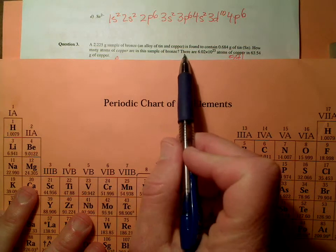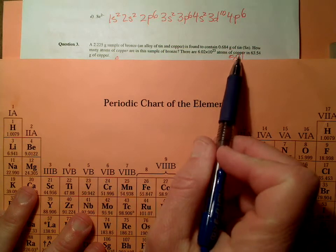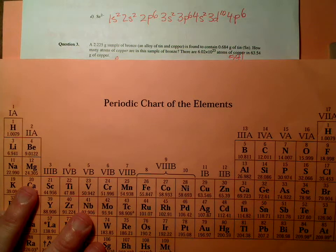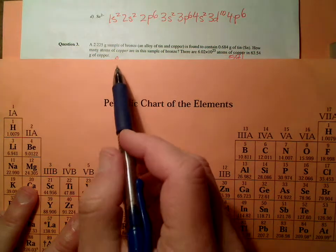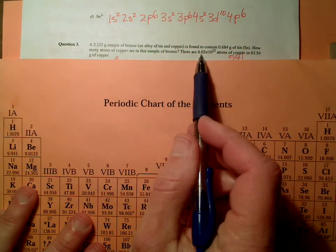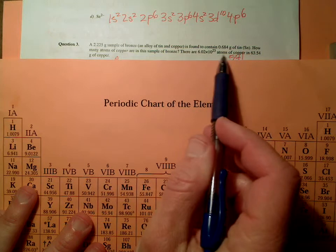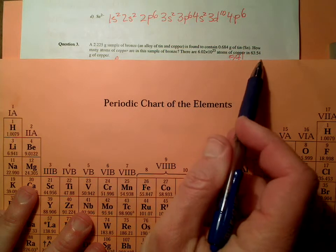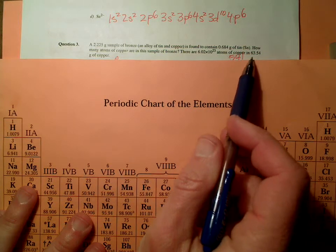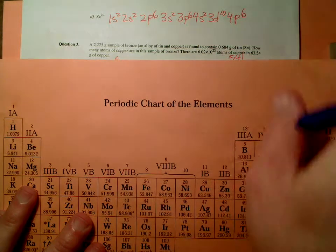And that tells us something else. There are 6.02 times 10 to the 23rd atoms of copper in 63.54 grams of copper. So that's a conversion factor. 6.02 times 10 to the 23rd atoms is 63.54 grams of copper. So that's a conversion factor.